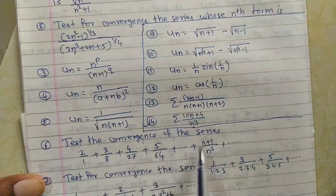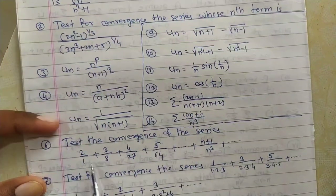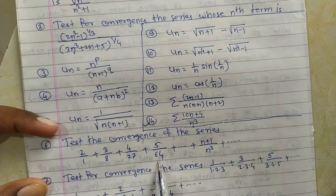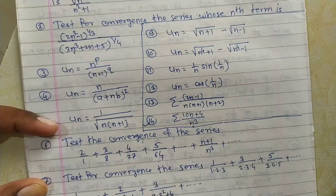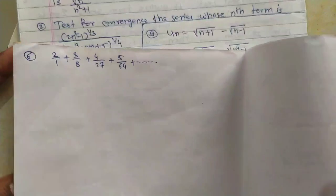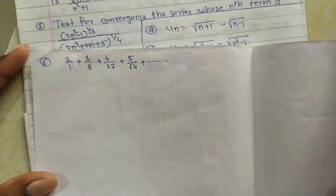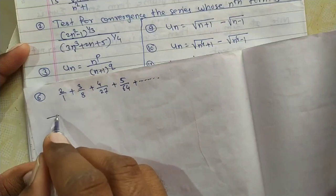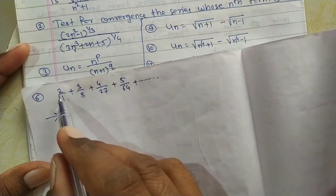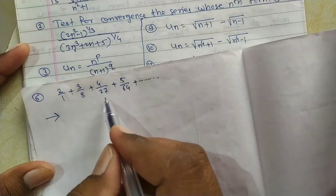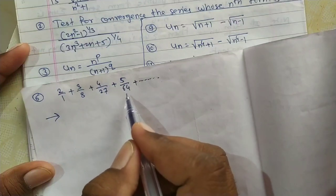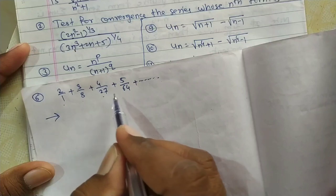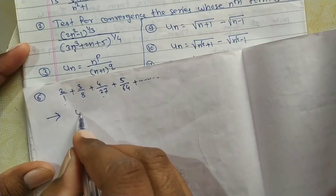Problem 6: Test the convergence of the series 2/1 + 3/8 + 4/27 + 5/64 + ... In an infinite series, the most important thing is how we find the nth term. The given series is 2/1 + 3/8 + 4/27 + ..., where u1, u2, u3, u4 are the successive terms.